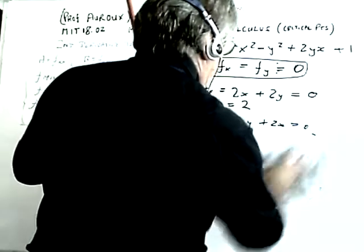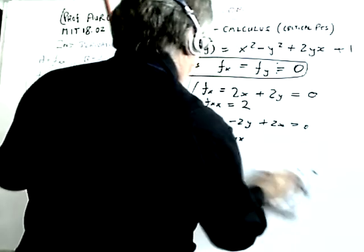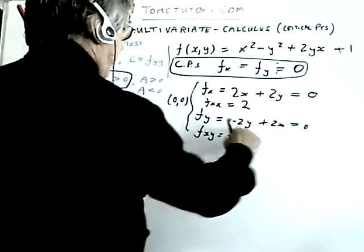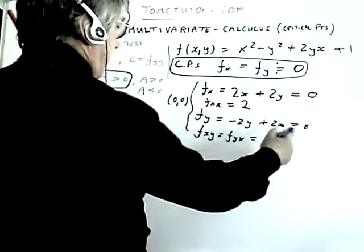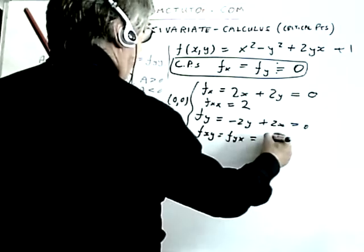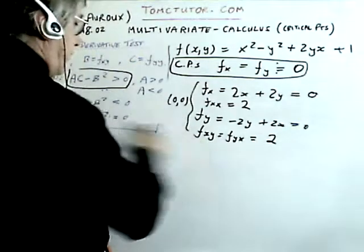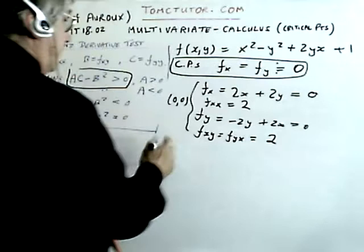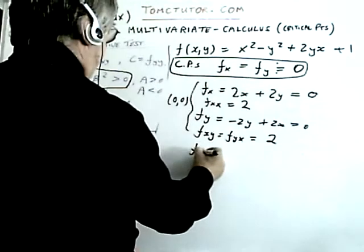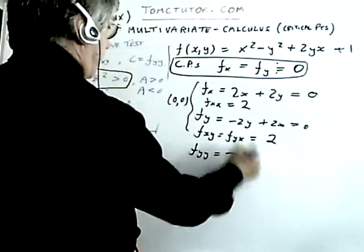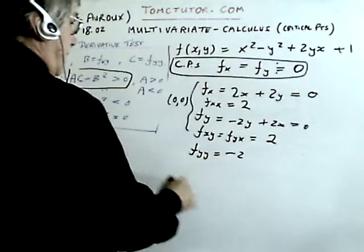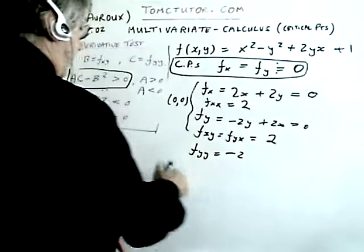So let's differentiate this with respect to x, because it's fyx. So that's just plus 2 there. So that's fyx, or fxy. And we need fyy as well. So it's the differential of this with respect to y, and that's just minus 2. So these are my ABCs.